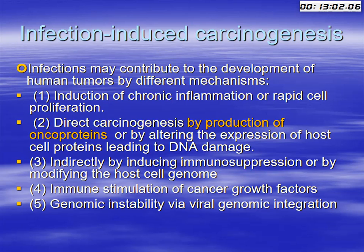Infections can contribute to the development of human tumors by many different mechanisms. The first and most important is the induction of chronic inflammation or rapid cell proliferation. The second is the direct carcinogenic effect via production of oncoproteins, or altering the expression of host cell proteins leading to DNA damage. Indirect mechanisms include inducing immunosuppression, modifying the host cell genome, immune stimulation of cancer growth factors, and genomic instability via viral genomic integration.